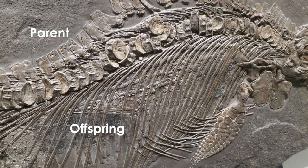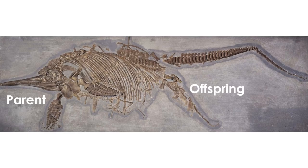Fossils can tell us how ancient organisms fed and interacted with each other, and they can also tell us about reproduction. A 180-million-year-old ichthyosaur fossil from the Jurassic of Germany was pregnant at the time of its death and fossilization — today you can see the remains of its offspring preserved inside of it. Another ichthyosaur may have died while giving birth, found with its offspring in the birth position. Together, these ichthyosaur fossils tell us that ichthyosaurs did not lay eggs like other reptiles — they carried their young inside of them like mammals.